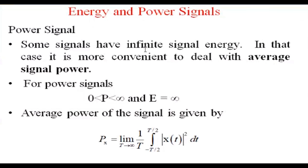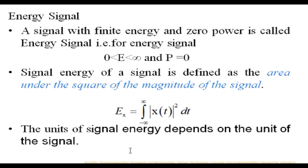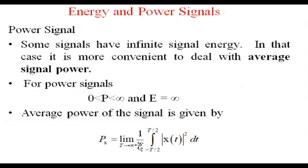Some signals have finite signal energy. In that case, it is more convenient to deal with average power. If you see here, for energy we are taking minus infinity to infinity, however when we are taking the power the limits have been changed to minus T/2 to T/2.